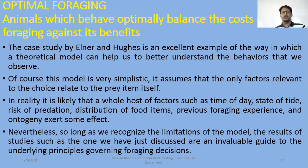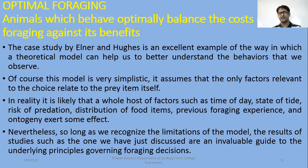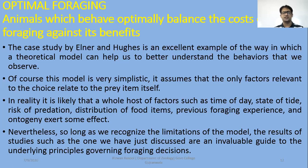Two scientists have explained this in a theoretical way. Of course, this model is very simplistic. It has assumed that in optimal foraging theory, animals make rational food choices. In reality, a whole host of factors — such as time of day, state of the tide, risk of predation, and distribution of food items — all affect foraging behavior. Nevertheless, so long as we recognize the limitations of the model, studies such as the iguana example provide an invaluable guide to the underlying principles governing foraging decisions.